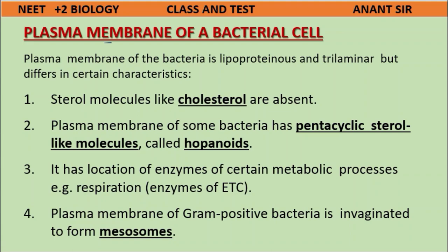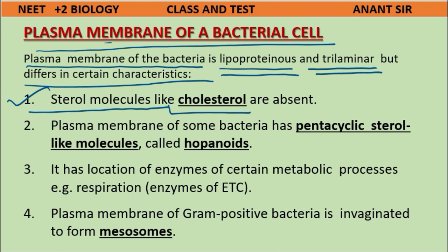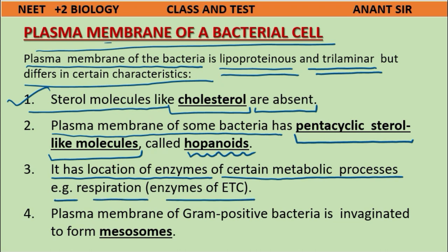The plasma membrane of a bacterial cell is lipoproteinous and trilaminar, but differs in certain characteristics. First, sterol molecules like cholesterol are absent in bacterial cells. The plasma membrane of some bacteria has pentacyclic sterol-like molecules called hopanoids. It also has a location of enzymes of certain metabolic processes, i.e., respiration enzymes of the electron transport chain (ETC).